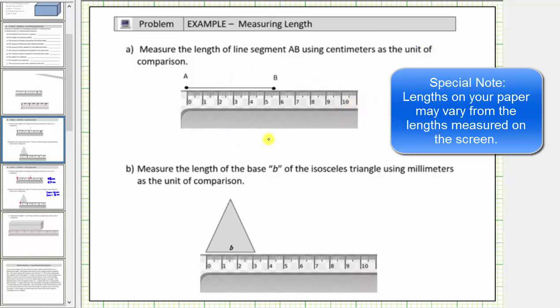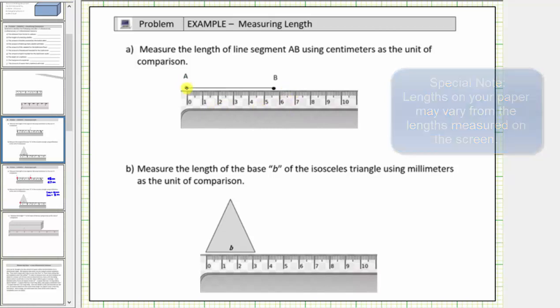This is a centimeter ruler, which means each large unit has a length of one centimeter. To measure the length of segment AB, we line up point A with zero on the ruler, and then measure the length out to point B.